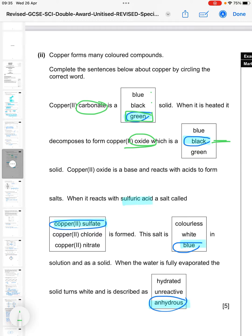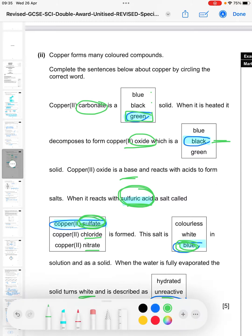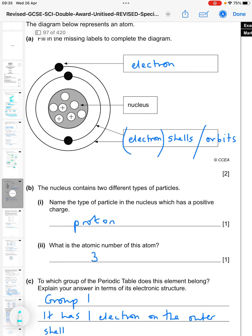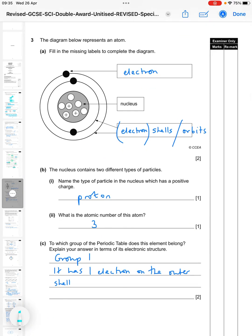So just to go back to those - copper carbonate, you need to learn that, is green. Copper sulfate would be blue. Copper oxide is black. Then copper oxide is a base that reacts with acids to form salts. So we know the salt name comes from the name of the acid, so sulfuric acid will give you a sulfate salt. Chloride would be from hydrochloric acid and nitrate would be from nitric acid. Then copper sulfate is blue when it's hydrated, and then when it's anhydrous, it is white. That's the test for water - to react it with anhydrous copper sulfate.